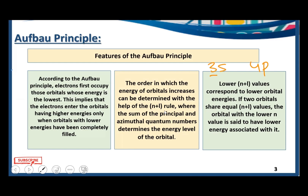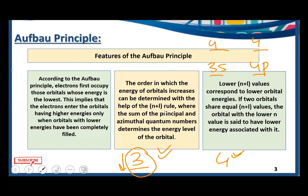If two orbitals share equal n plus l values, then the orbital with the lower n value has the lower energy. For example, 3s and 4p — if they happen to have the same n plus l value, we look at the shell number. Here s belongs to shell 3 and p belongs to shell 4, so we fill 3s first because it has the lower principal quantum number n.